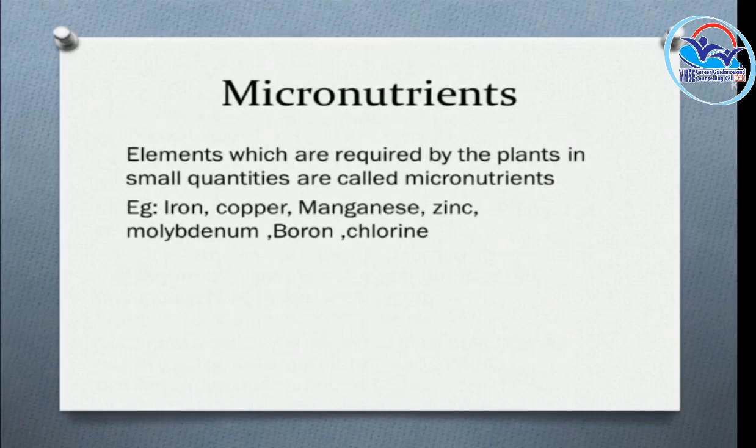Elements required by plants in small quantities are called micronutrients. These include iron, copper, manganese, zinc, molybdenum, boron, and chlorine.